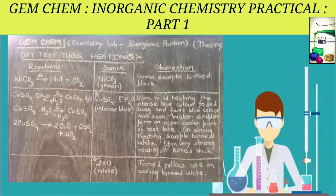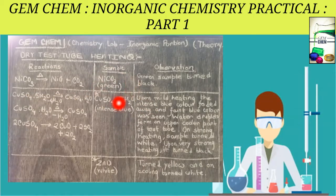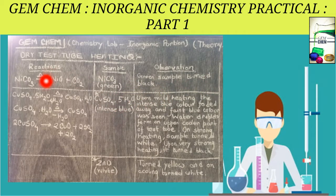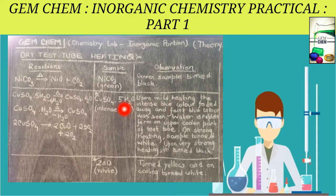If nickel carbonate is taken, it is green in color. On heating, the green sample turns black. This black color is due to the formation of NiO, which is black in color.